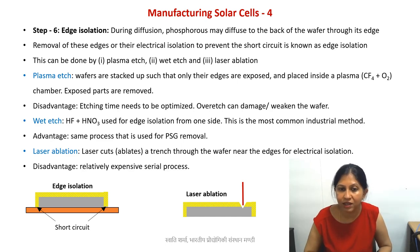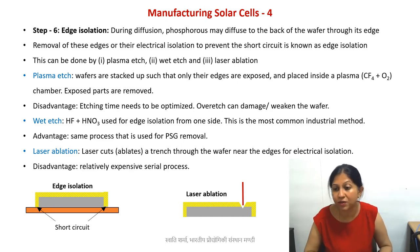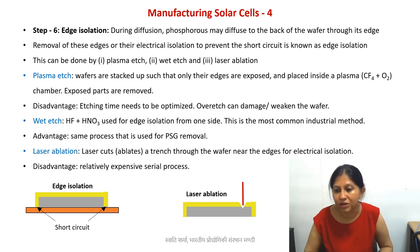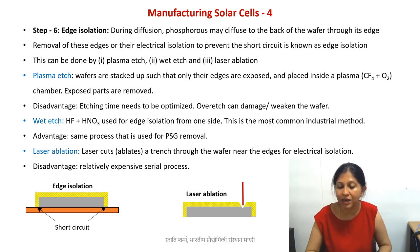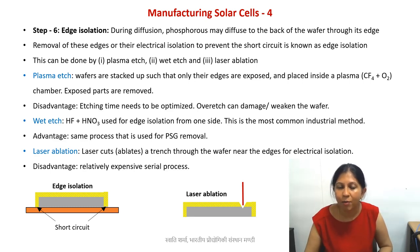One disadvantage of the laser technique is that it's relatively expensive compared to wet etching, for example. Another disadvantage is that it's a serial process — that is a problem with most laser processes — you need to do one wafer after the other and cannot really do a batch process. So this is a disadvantage, but for different purposes, different techniques are used.